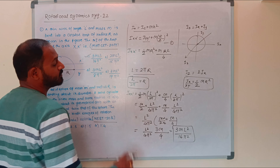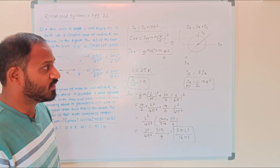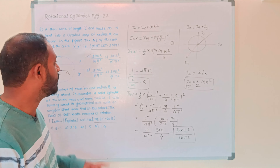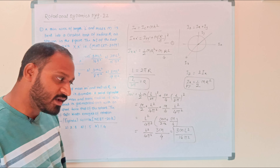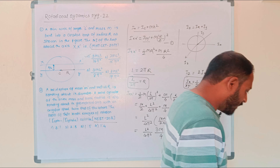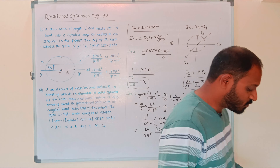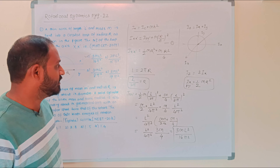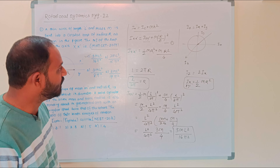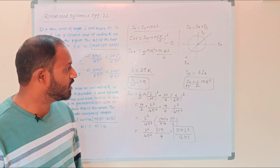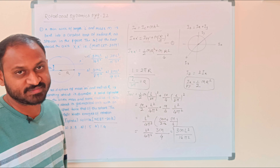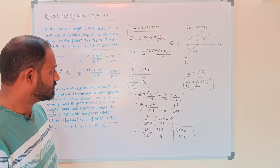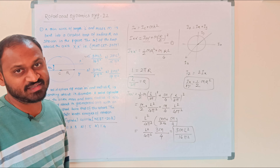The answer is 3M L² / (16π²), so option number one is correct. This question is from Maharashtra CET 2019 but its quality and richness totally matches with a NEET exam. The formation of the question is very common and represents that level.